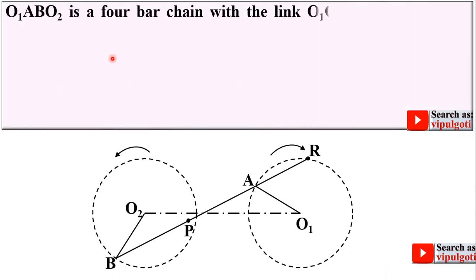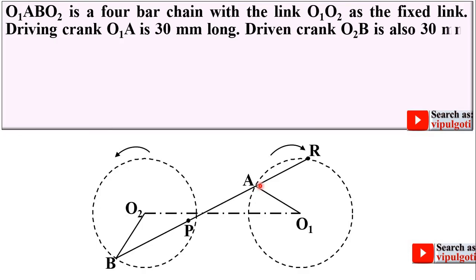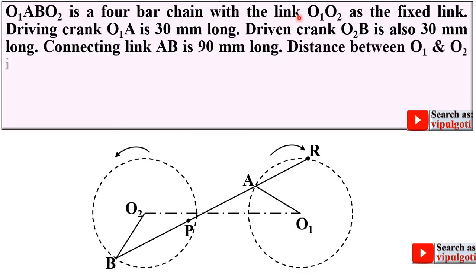Let us see the description of the problem O1ABO2. Here you can see O1ABO2 is the four bar chain with the link O1O2 as the fixed link.